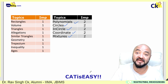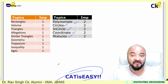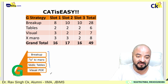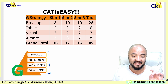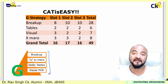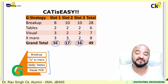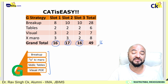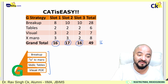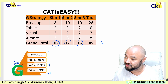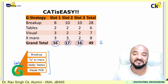CAT cracking is easy — CAT is easy if you focus on clearing the cutoff. Looking at the G-strategy, we have four shortcuts: break-up strategy, x-ka-baro, Vedic tables, and visual POE. Last year I could solve 16 questions in slot 1, 17 in slot 2, 16 in slot 3 — on average 16 questions could be done only by using these shortcuts. Follow the G-strategy and let's maximize our score.